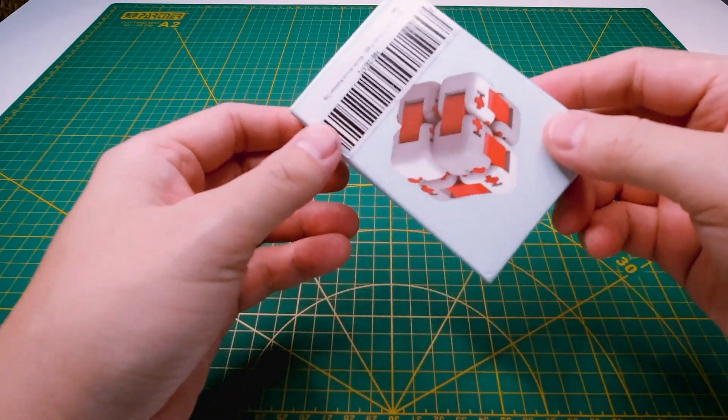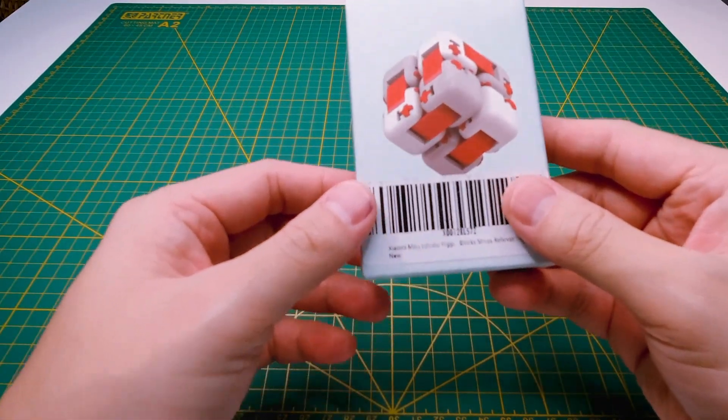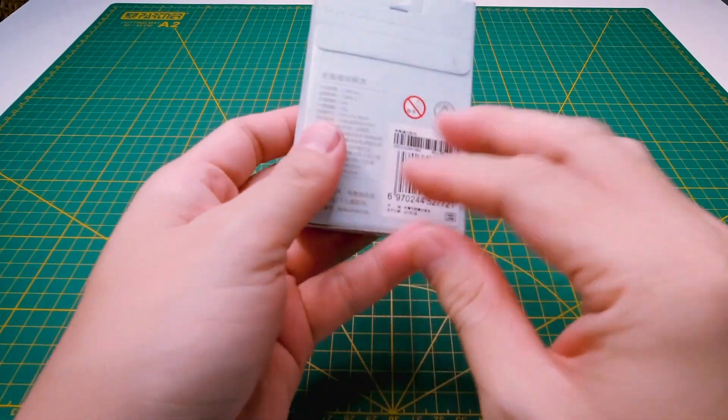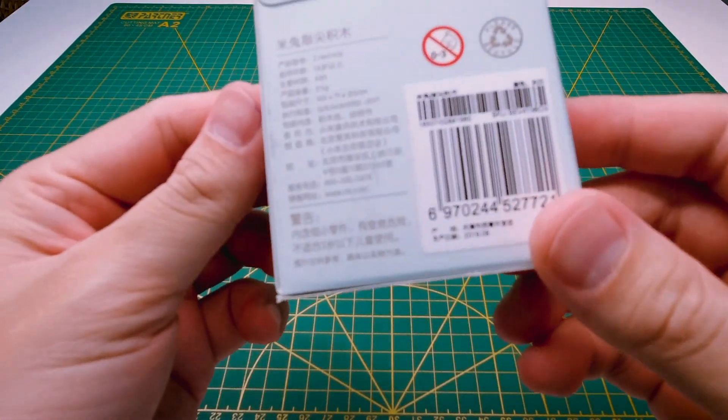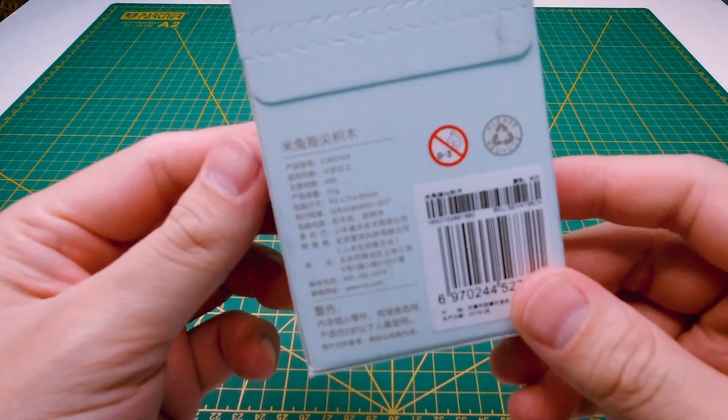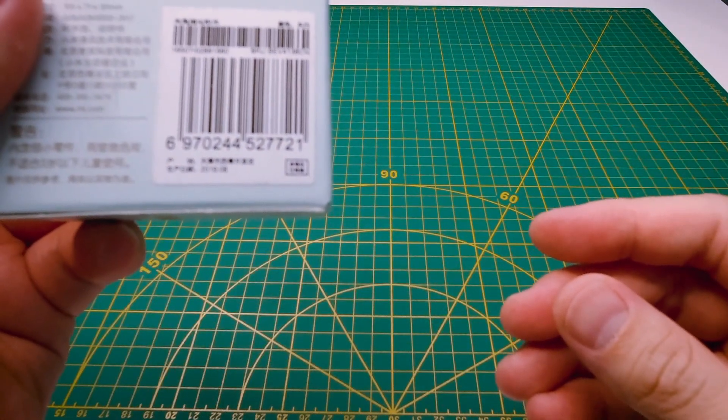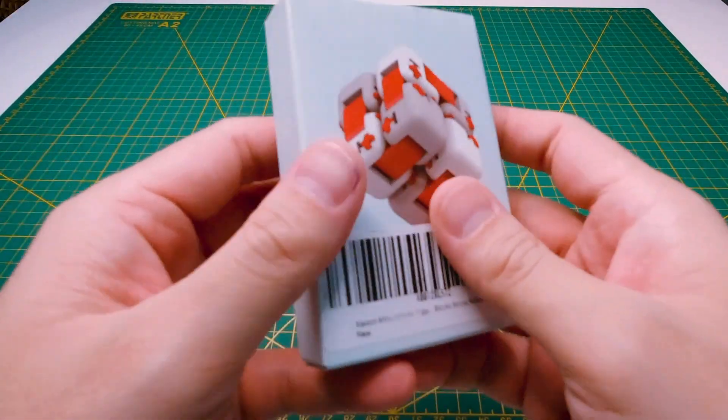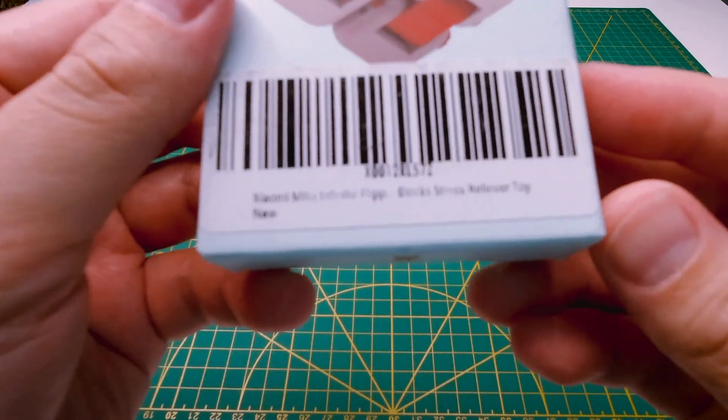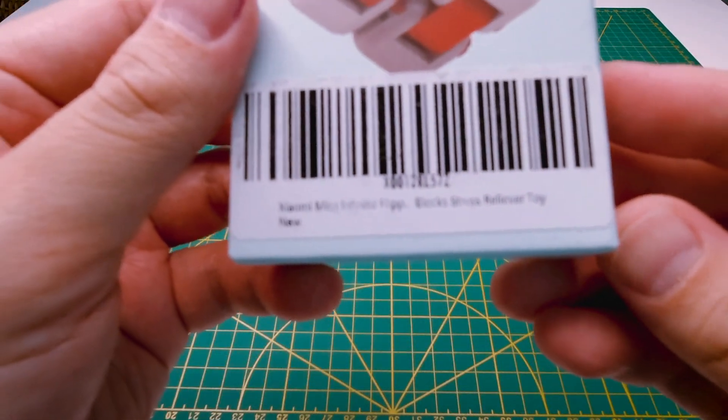Here's the Xiaomi box of our building blocks. The text in the box are mostly written in Chinese. I get this from Amazon.ae for 16 dirhams or around 4 US dollars or equivalent to 200 pesos.